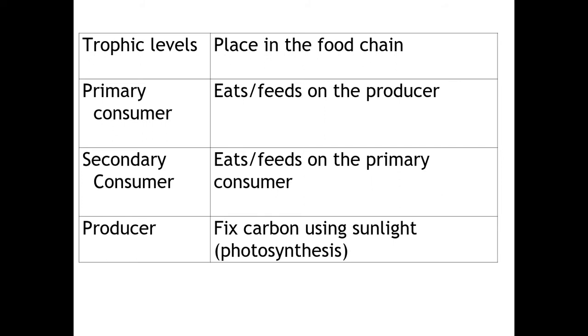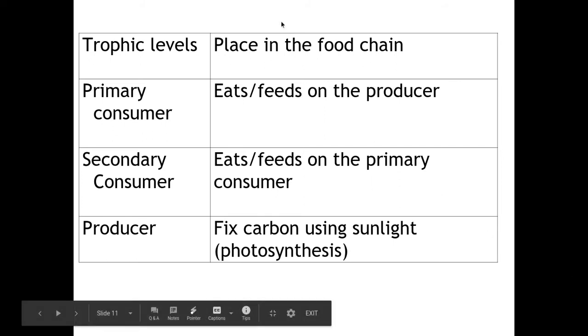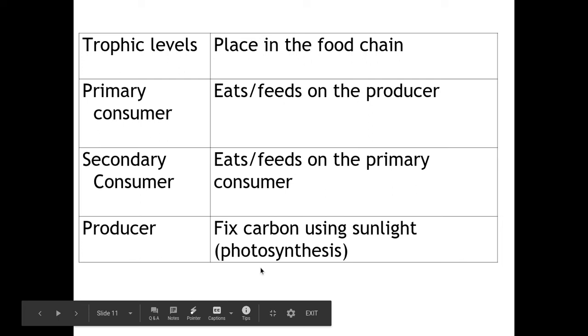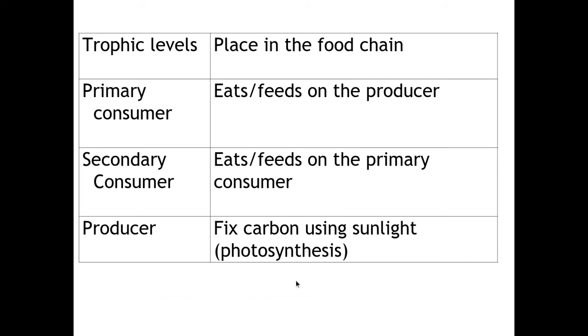So a couple of definitions that we need to know about. We have trophic levels, this is a place within the food chain. This is taken from the mark scheme, that top one there, the place within the food chain. Just going to skip to the bottom one, the producer. This is the one that fixes the carbon using sunlight, photosynthesis. So this is our plants, for example.